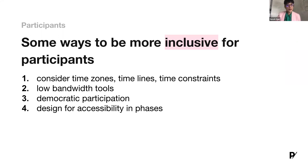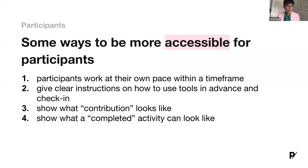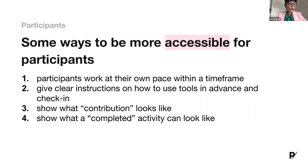Some things we can do to be more accessible for participants include allowing them to work at their own pace within a timeframe, giving very clear instructions on how to use tools in advance with check-ins by facilitators or the scribe, leaving instructions visible on your broadcast channel, and showing an example of a completed activity so participants know what they're working towards and what contribution looks like — whether through text, a collage, or otherwise.